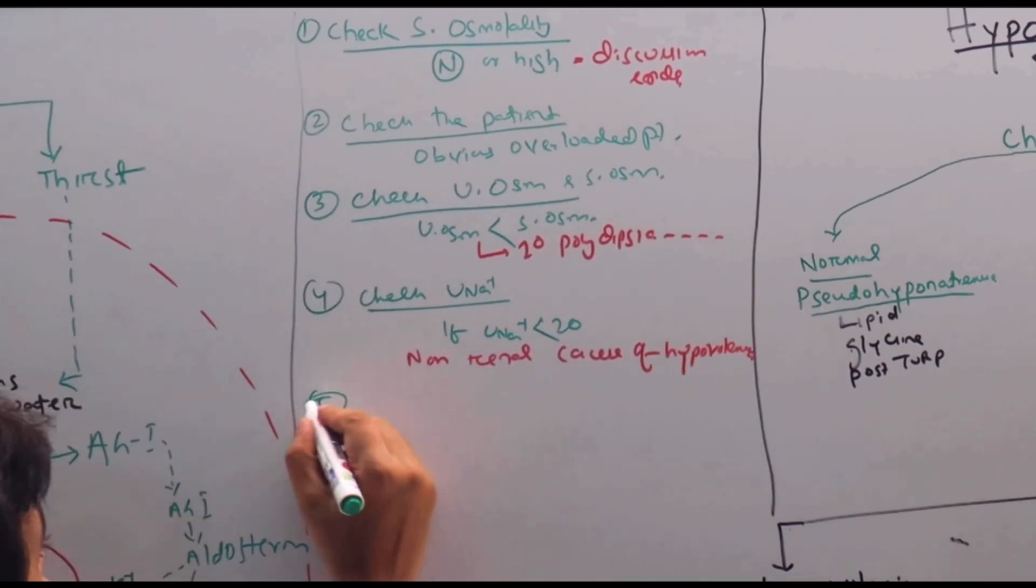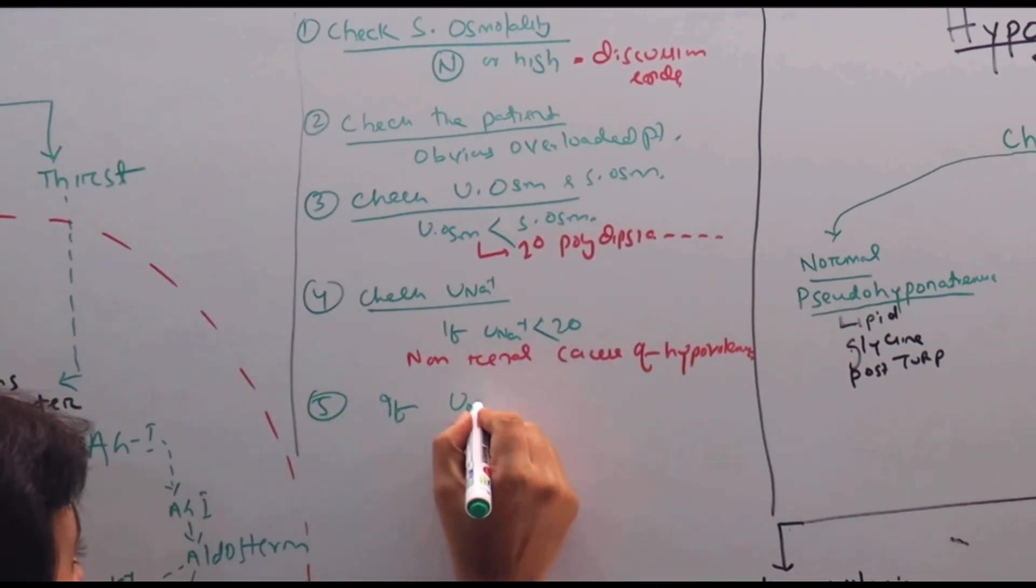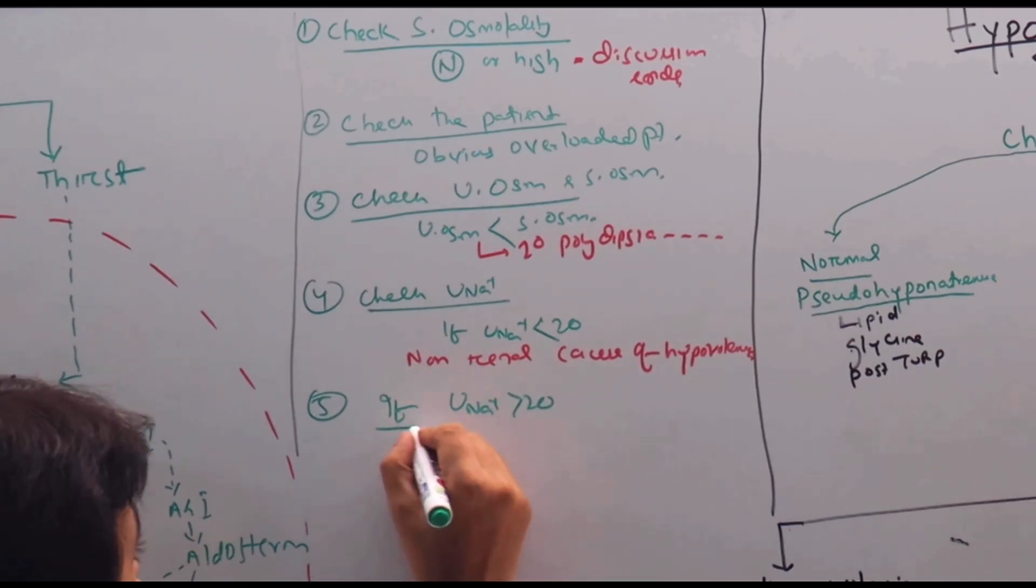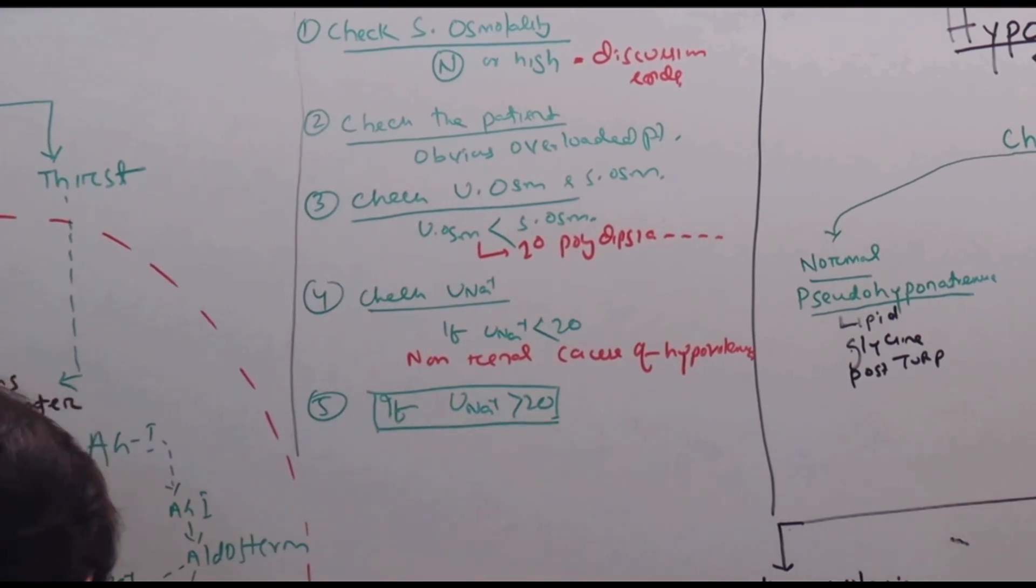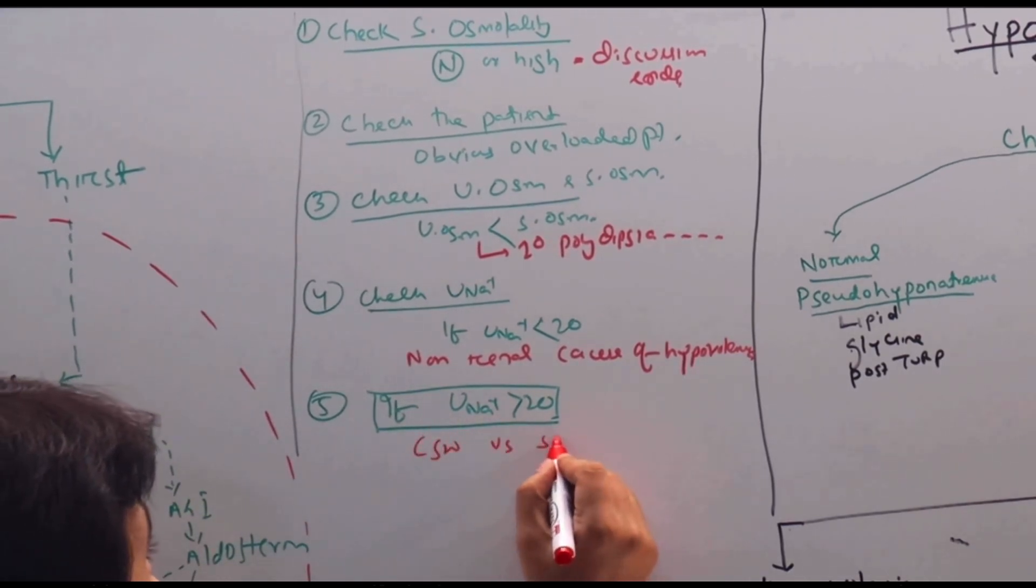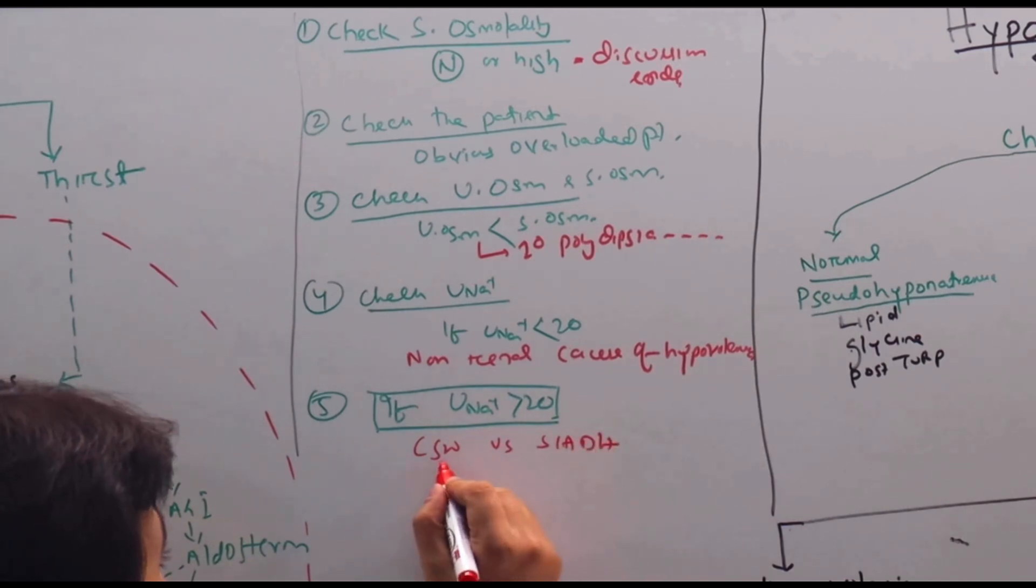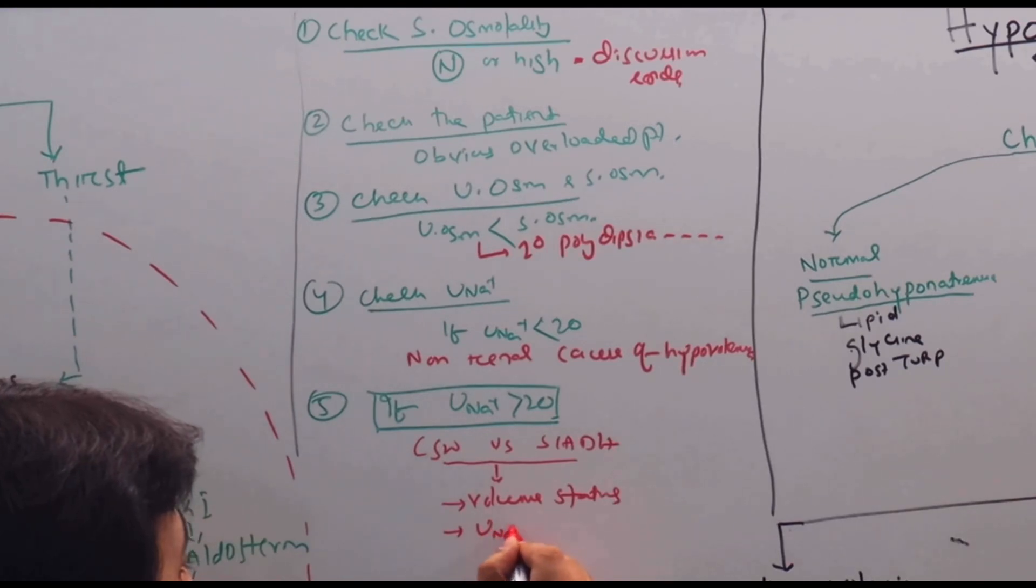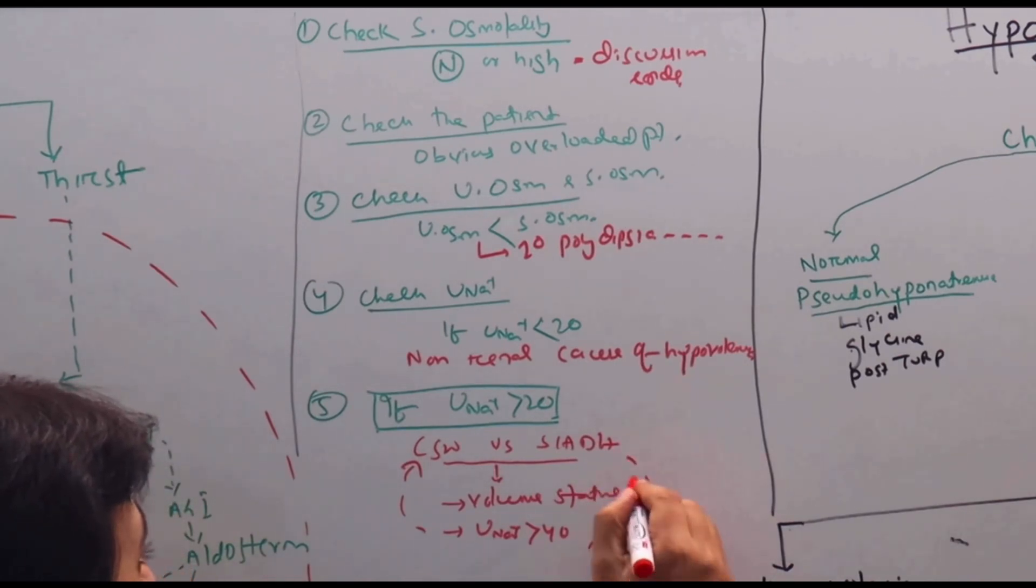Number five, if urine sodium is more than 20, at this time only we have to be very careful to differentiate between CHF versus SIADH. You can do that by looking at the volume status. Or if urine sodium is more than 40, it goes more toward CHF. If it is 20 to 40, it goes to SIADH.